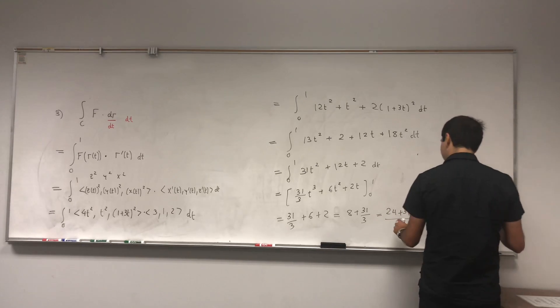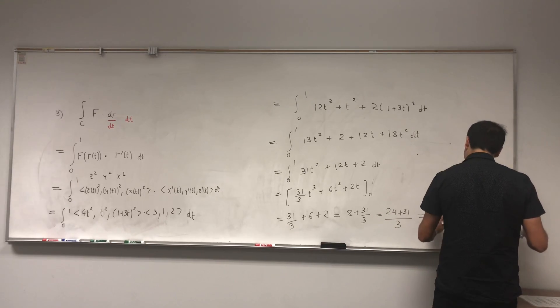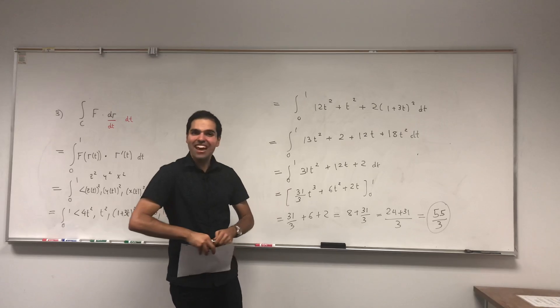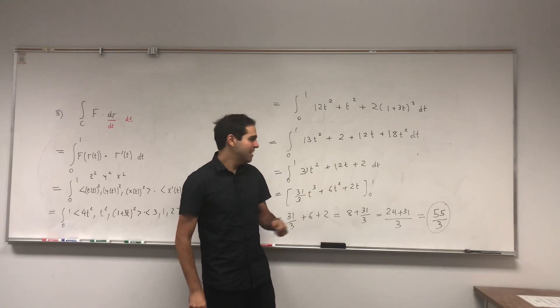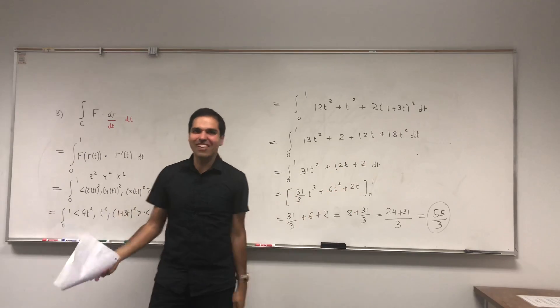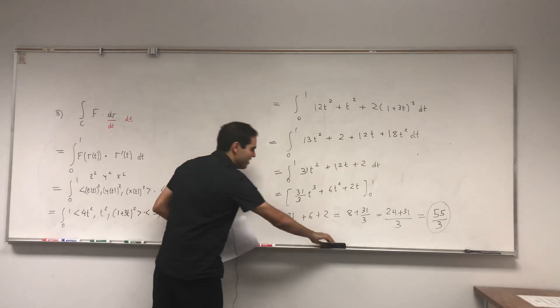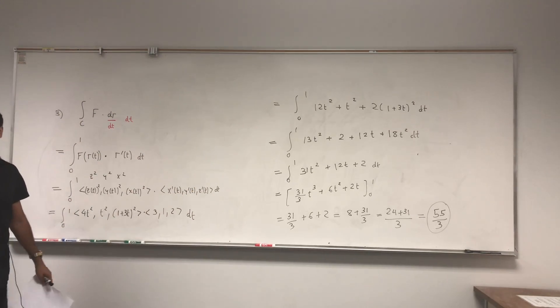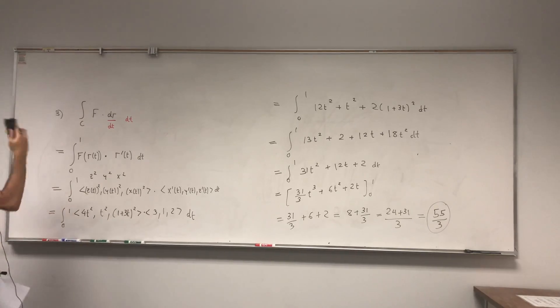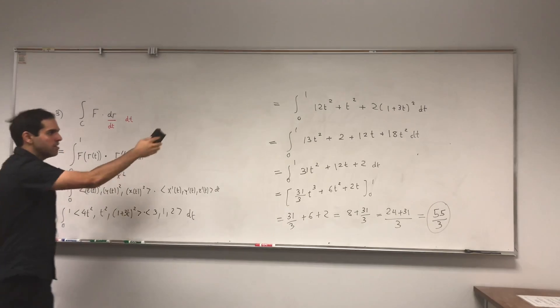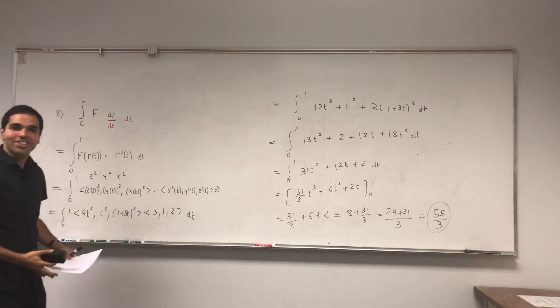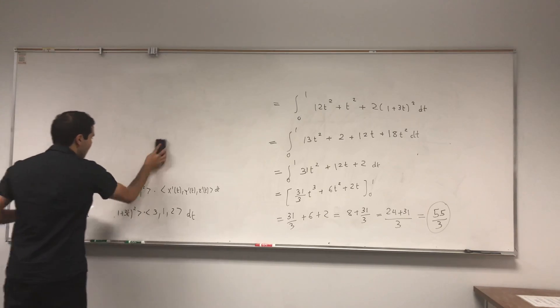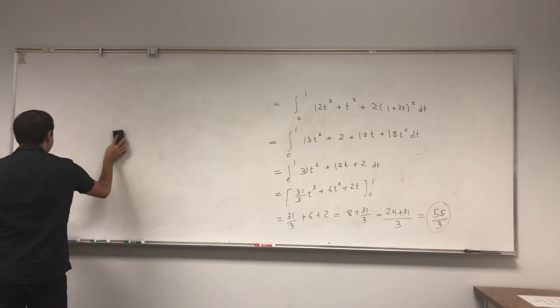And by the way, 55, math 55, it's the very first class I took in Berkeley, and that's actually how we met. So how cool is that? So great, this line integral, f dotted with dr, is just 55/3. And what's important to understand, you get a number because in the end, you're integrating just a simple function. You're not integrating a vector.